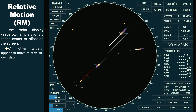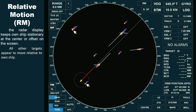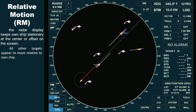Meanwhile, in relative motion display, all other targets appear to move relative to our ship. Even stationary targets, such as buoys, landmasses, or anchored vessels, appear to move relative to own ship's position. When the trail is set to true, no trails will appear for stationary objects. However, if the trail is set to relative, all stationary targets will display trails that give the illusion of moving in the opposite direction of the own ship's motion. This occurs because in relative motion, the radar treats the own ship as stationary, while everything else appears to move around it. As a result, the trails of stationary objects will be shown pointing in the direction opposite to own ship's heading.